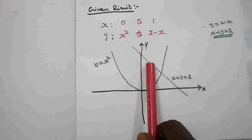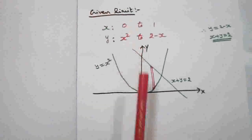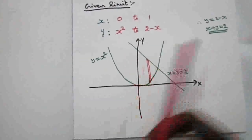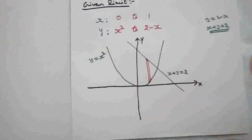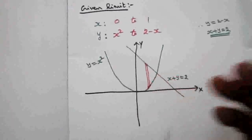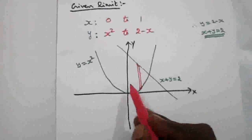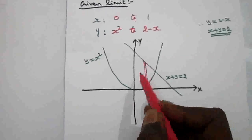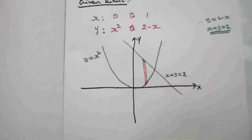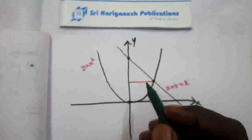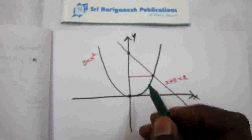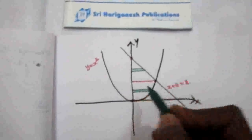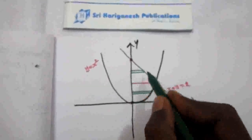Now I am going to change to a horizontal strip in this region. This is a special problem because if you put a horizontal strip, there are two possibilities: one ends with the parabola, another ends with the straight line. So this divides into two portions, I1 and I2. I also need to find the point of intersection.